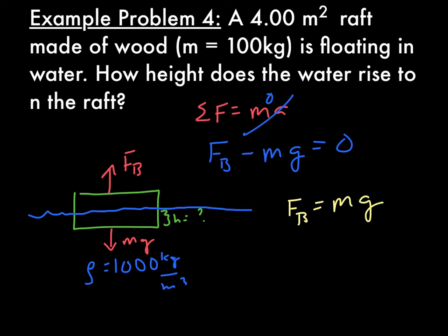Now we know that the buoyant force is equal to the weight of the fluid displaced. So that is rho for the fluid, g, volume equals mg. Very quickly, we can see that these g's cancel out. That is why I like working with variables. And let's plug in that this volume is the area of the raft times the height.